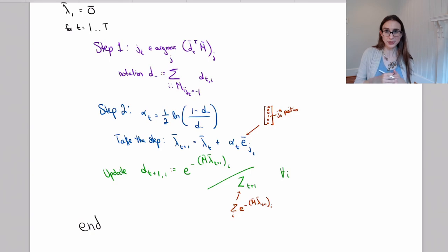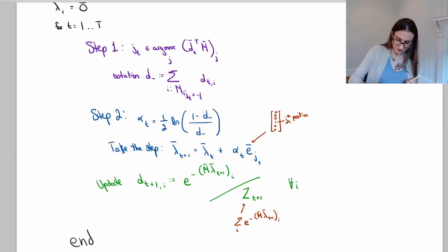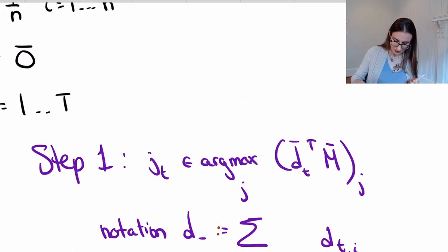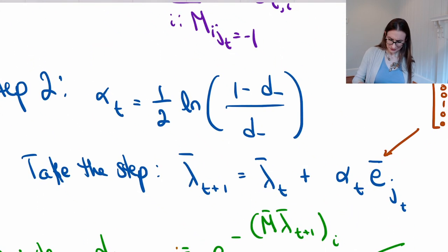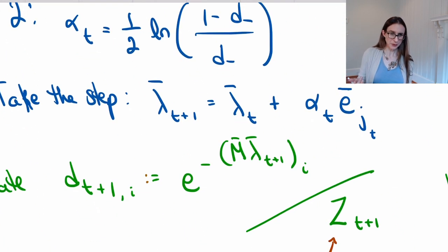This is getting closer to AdaBoost, but there's two reasons why it doesn't look exactly like AdaBoost. First of all, this first step where we're trying to find the maximizer over weak classifiers—in AdaBoost that's a weak learning algorithm choosing the weak classifiers. Is this the weak learning algorithm there?